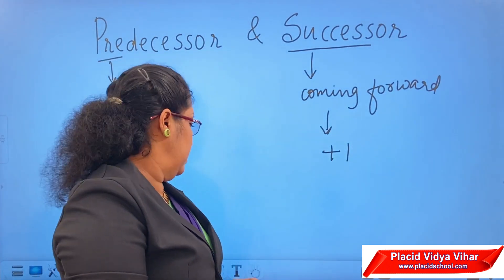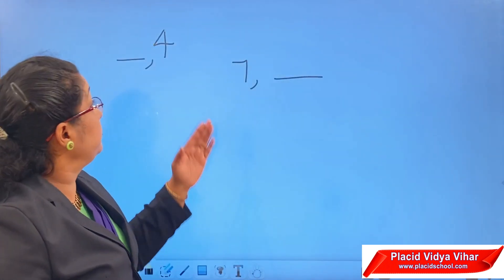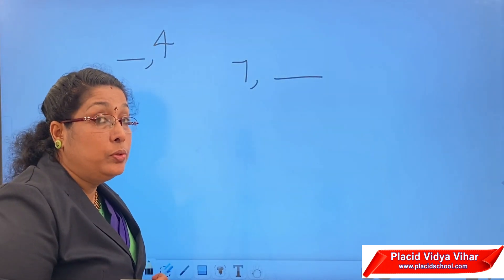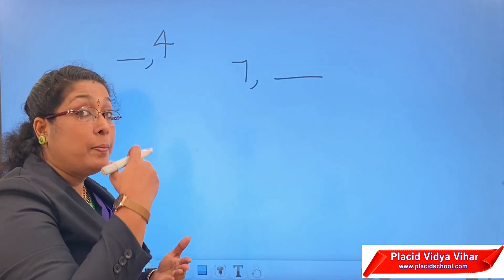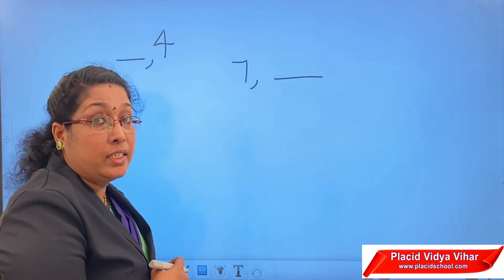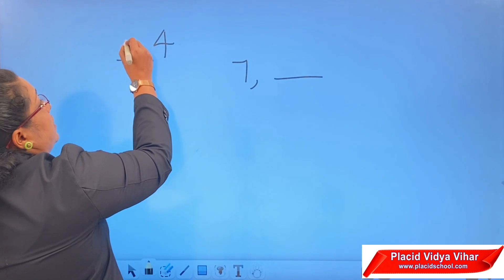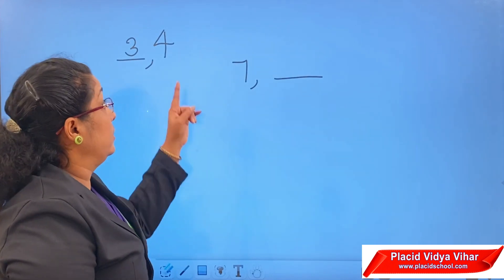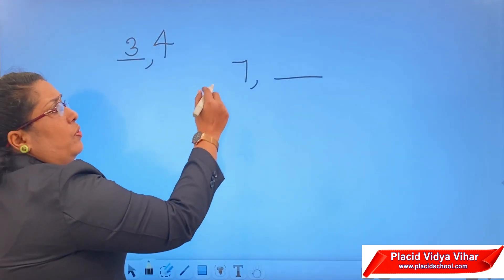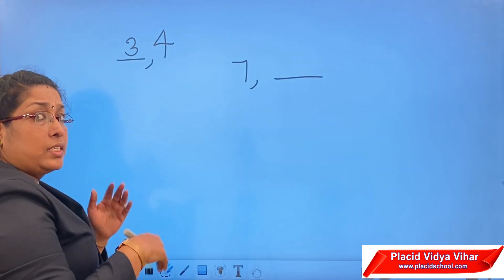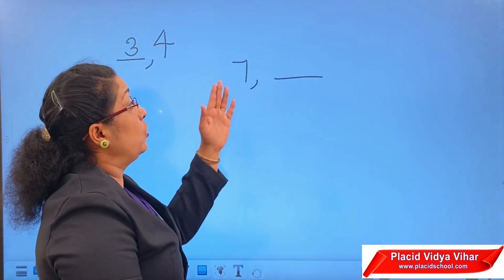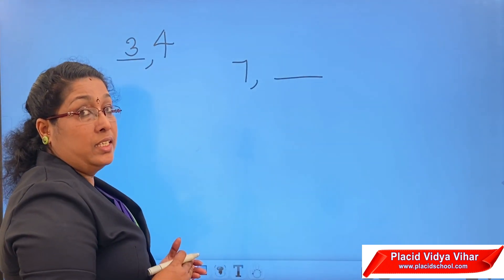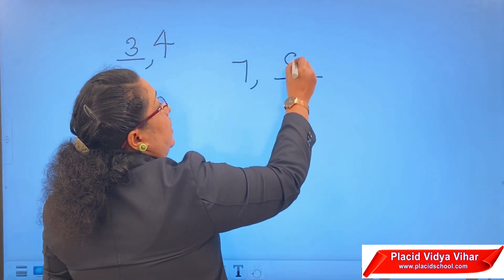Let us look at some examples. Find the predecessor of the number 4. Predecessor means subtract 1, so 4 minus 1 is 3. So 3 is the predecessor of 4. Similarly, what is the successor of the number 7? Successor means coming forward, so we add 1 to 7. 7 plus 1 is 8.